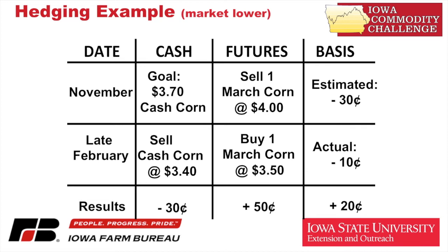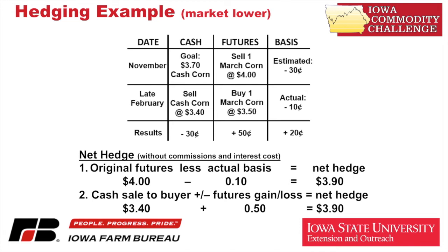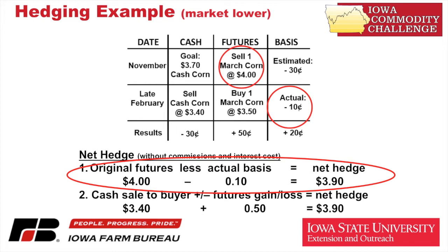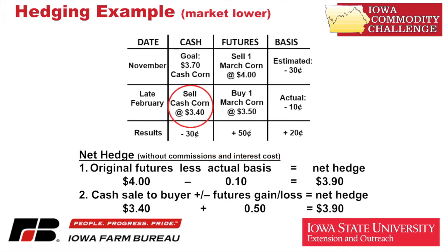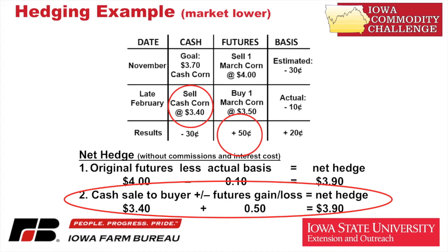That $0.50 futures gain more than makes up for the cash loss of $0.30 from the goal. To figure the net: take the $4.00 initial futures sale and subtract the $0.10 that basis actually ended up being, and that would be $3.90. So we beat our goal by $0.20. The other way to figure it: we got $3.40 from the elevator at Bondurant, add in the $0.50 we gained in futures, and we get $3.90 as well. We beat our net hedge, shown in the bottom right-hand corner of that diagram.